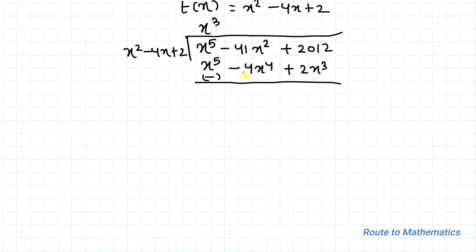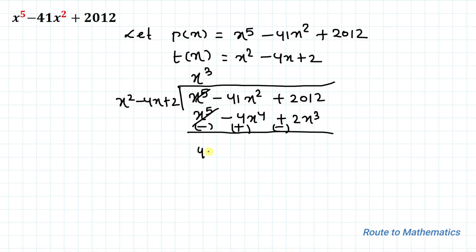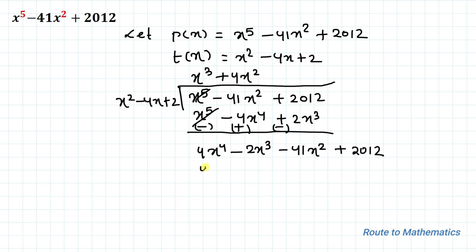Where we have a positive term we take minus, and vice versa. The x⁵ terms cancel out, leaving 4x⁴ - 2x³ - 41x² + 2012. To cancel the 4x⁴ term we add 4x² to the quotient, giving 4x⁴ - 16x³ + 8x².